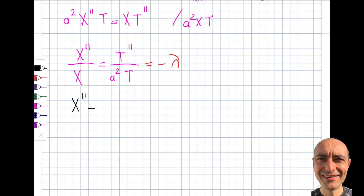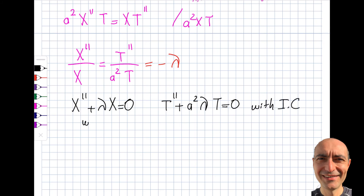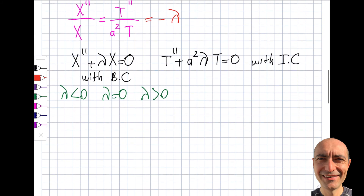Setting each side equal to −λ yields two ODEs. The first, in X, is identical to what was covered in the heat equation. The second, in T, is: T'' + a²λT = 0. I analyze three cases for λ: zero, negative, and positive. I'll link to where I analyzed the zero and negative cases in the heat equation — both give only trivial solutions.